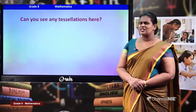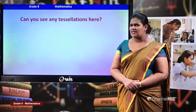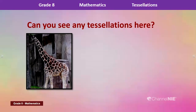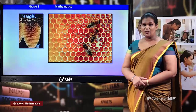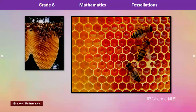Now I'm going to give you some pictures — check whether you can see a pattern. Here we can see a giraffe, and we can see a pattern in its skin. Is it a tessellation? Here I have a tortoise — can you see a pattern? Is that a tessellation? Now this is a beehive. We can see some hexagons there. Is that a tessellation?